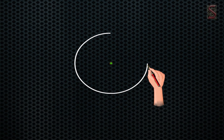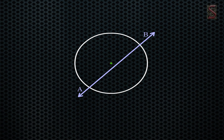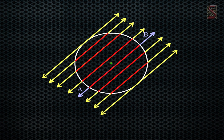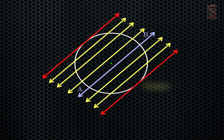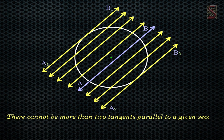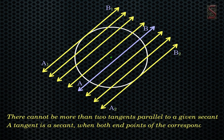Draw a circle and a secant AB to the circle. Now let us draw lines parallel to this secant on either side of it. We see that the length of the chord cut by the lines decreases as we go further away from the secant. At one position it becomes zero on either side — that line becomes the tangent to the circle. So the lines A1B1 and A2B2 are the tangents to the circle parallel to the secant AB. Hence there cannot be more than two tangents parallel to a given secant. A tangent is a secant when both end points of the corresponding chord coincide.